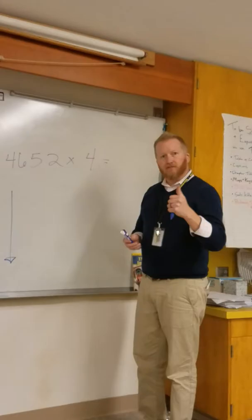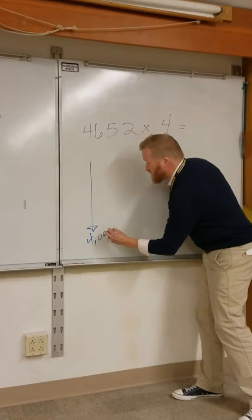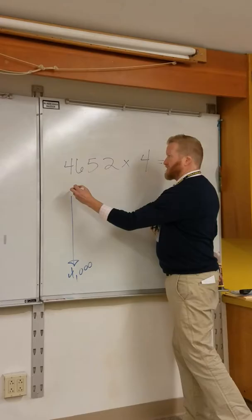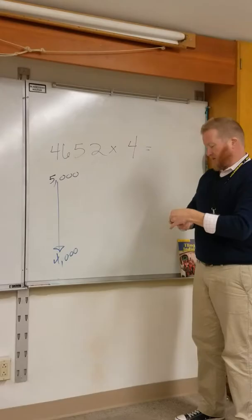So first, I get myself ready by counting by 1,000: 0, 1,000, 2,000, 3,000, 4,000. Cole, what is the next thousand up from 4,000? 4,001. I mean, 5,000. 5,000. Excellent.